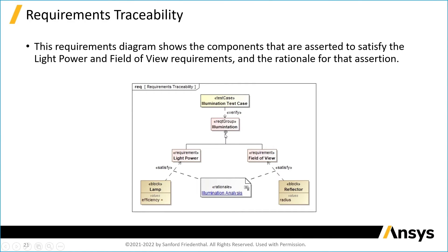What you see are these two design elements—the lamp and reflector—are asserted to satisfy these two requirements. This connects the requirements or traces the requirements to the design elements. But you also see there's a rationale here that connects to the satisfy relationship, and it points or refers to the illumination analysis that we just talked about on the previous slide. This basically relates the analysis to the requirements and the design.